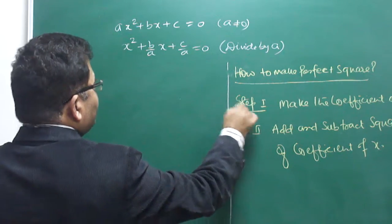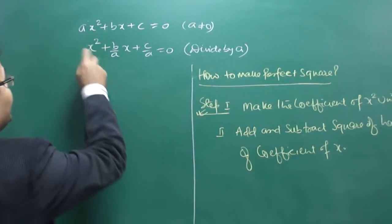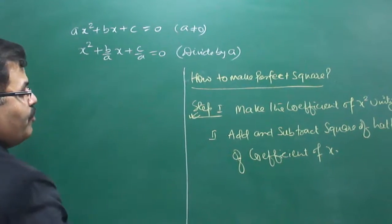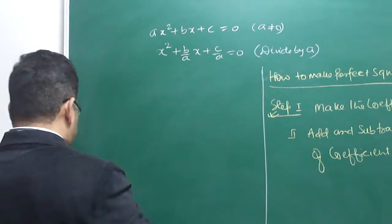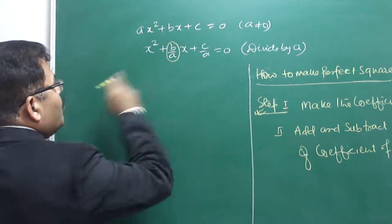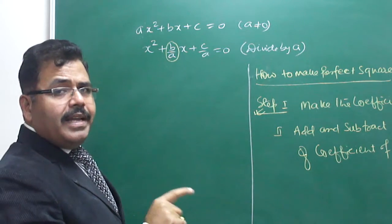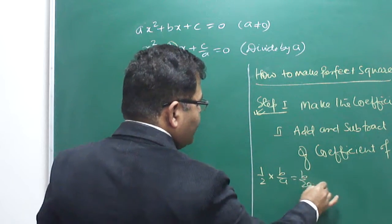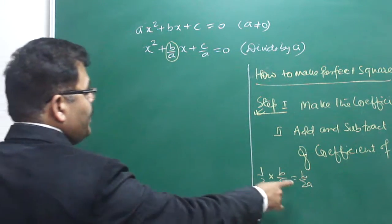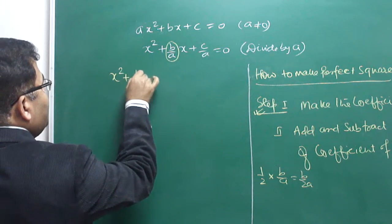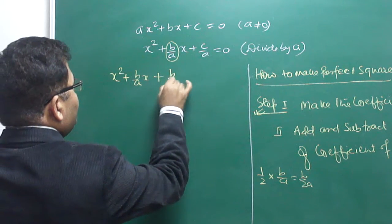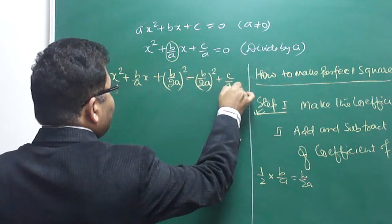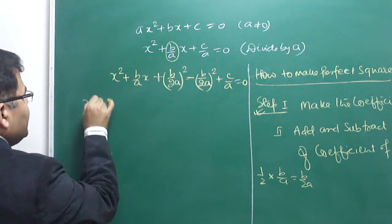The coefficient of x is b/a, half of that is b/2a. So I add and subtract (b/2a)². This gives: x² + (b/a)x + (b/2a)² − (b/2a)² + c/a = 0. Since I added (b/2a)², I also subtract it. The expression becomes a perfect square trinomial.